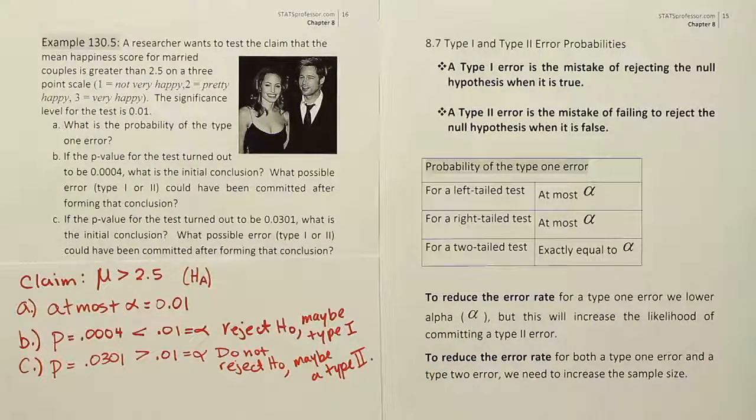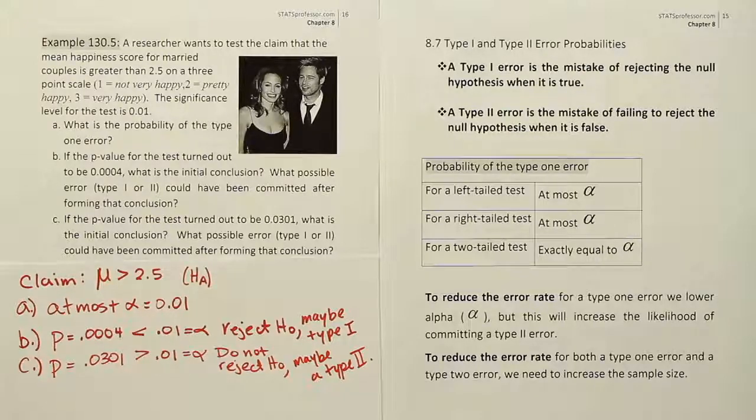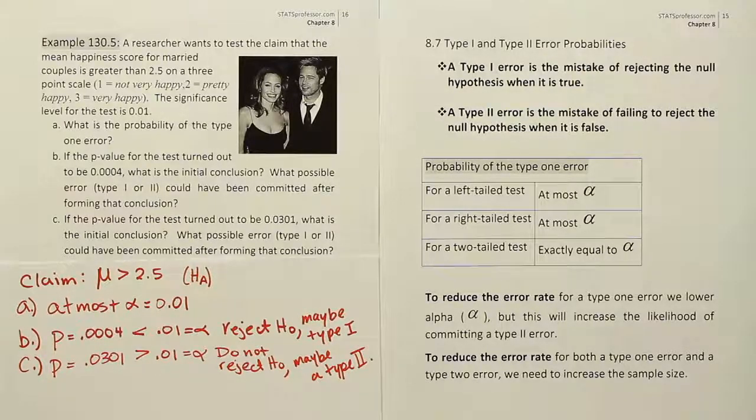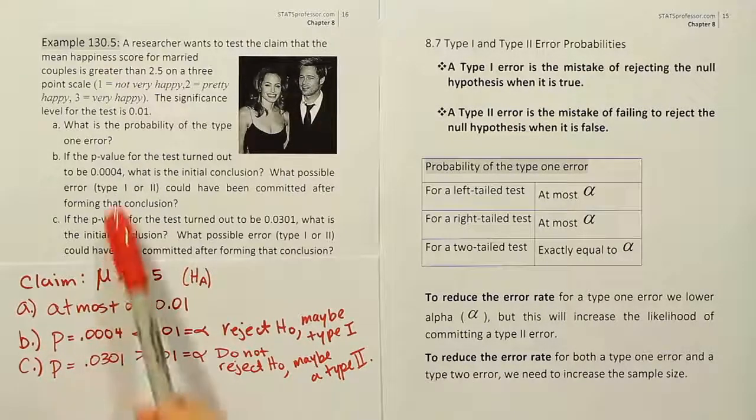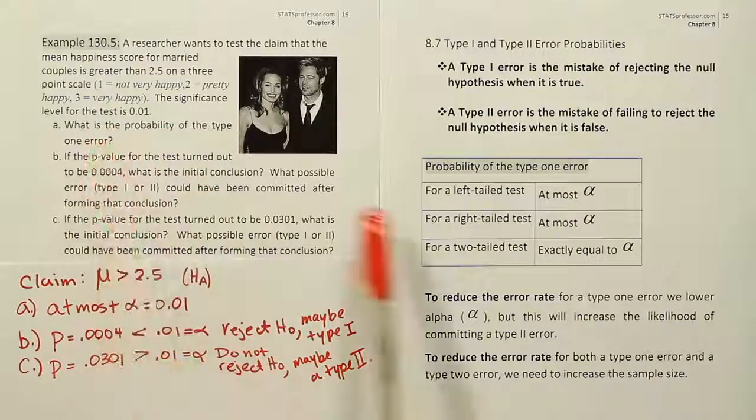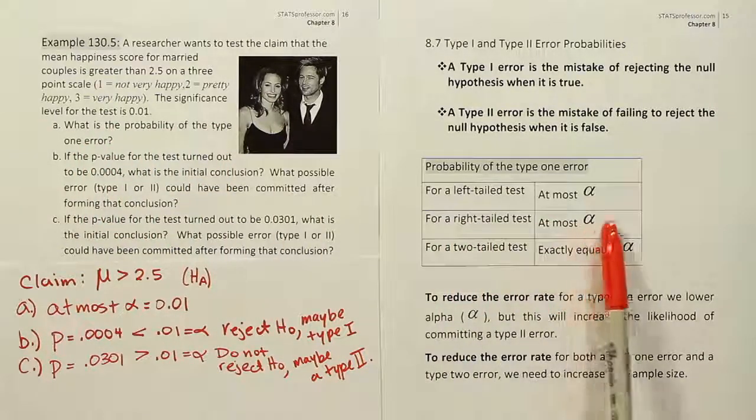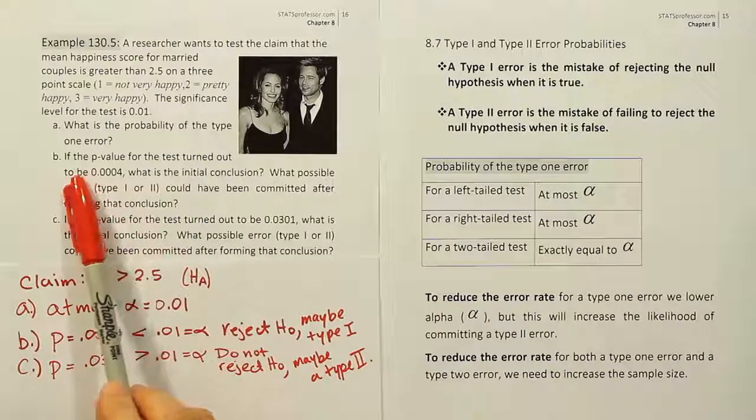And of course, the probability is always going to be higher that we don't make those kinds of mistakes. So in the end, those are the three answers for the problem. What's the probability of the type 1 error? Because it's a right-tailed test, it's at most alpha. In this scenario, where the p-value is small, a small p-value causes us to reject the null hypothesis.